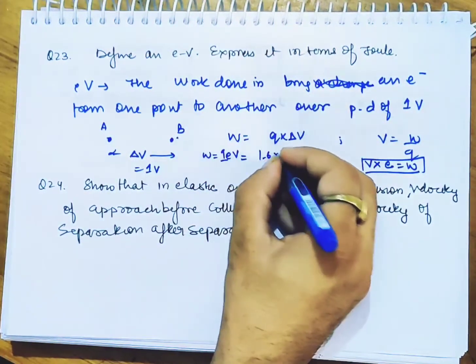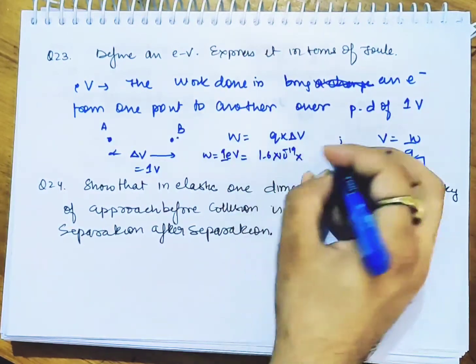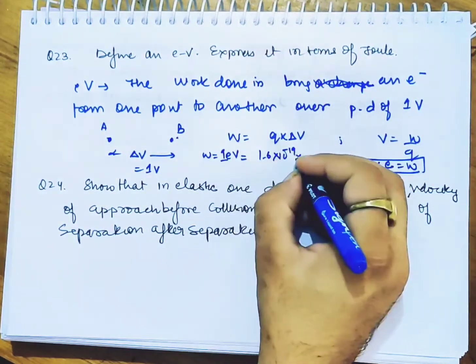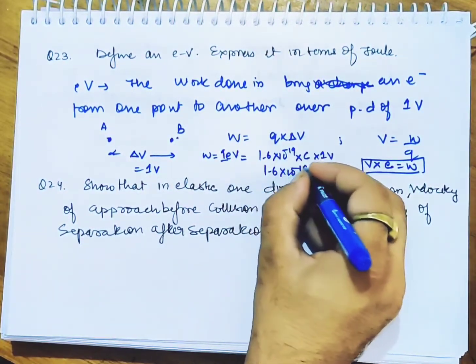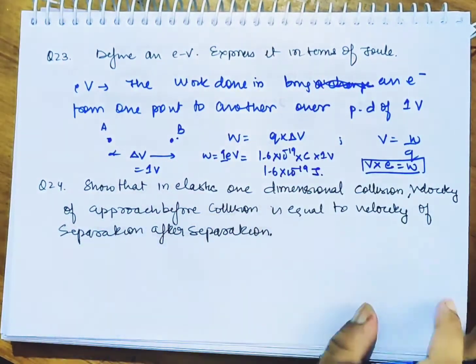The value is 1.6×10^-19 coulombs into 1 volt. Coulomb into volt equals joule. So 1.6×10^-19 joules is the value of 1 electron volt.